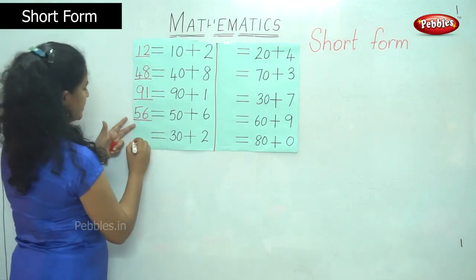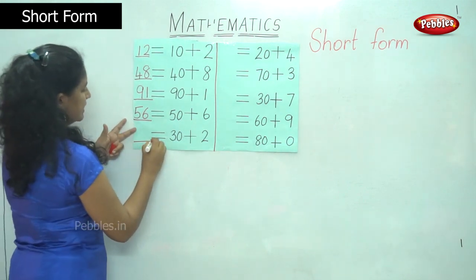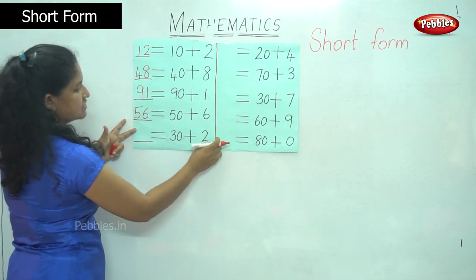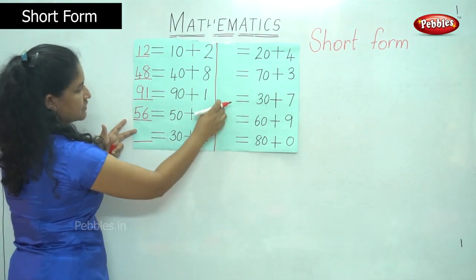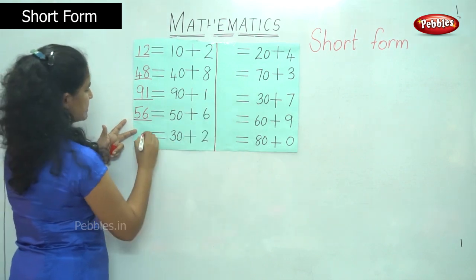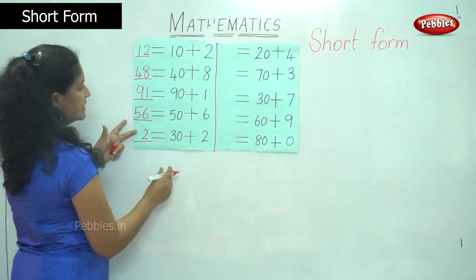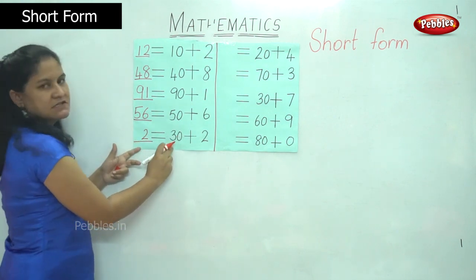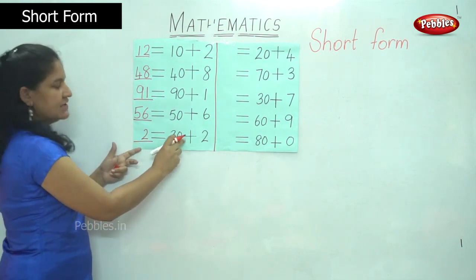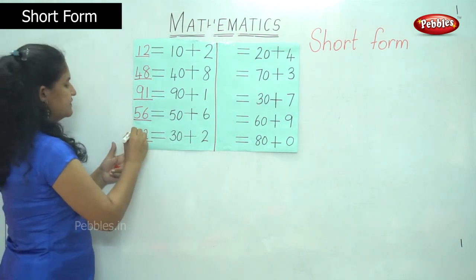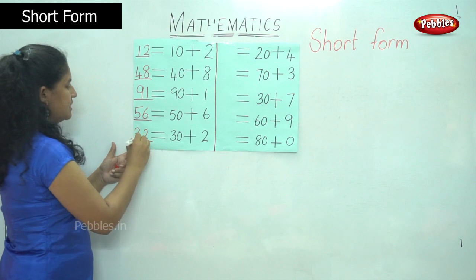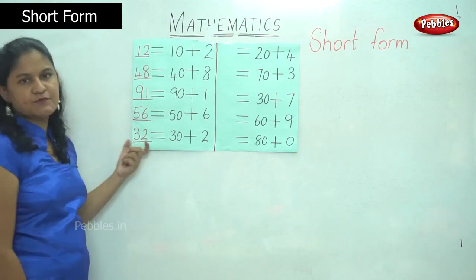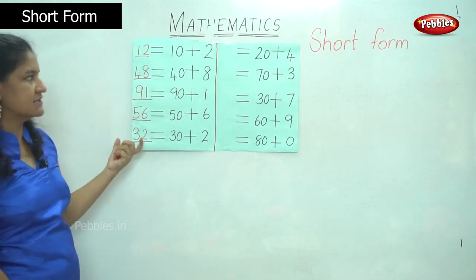The next number: dash is equal to 30 plus 2. So in the ones place I have number 2, and in the tens place I have 30 or 3 tens, that gives me the number 3. So my answer is 32.